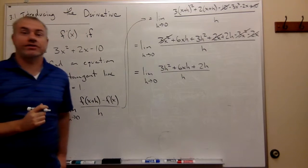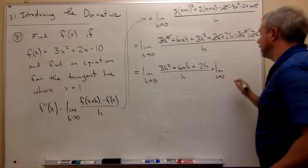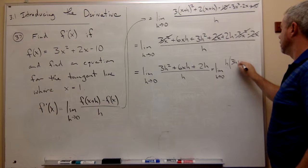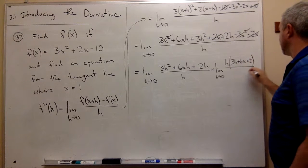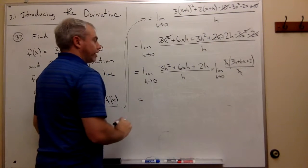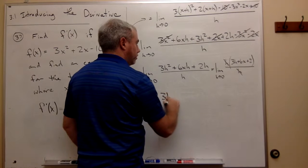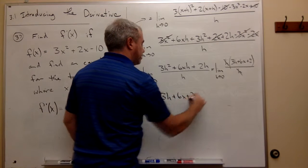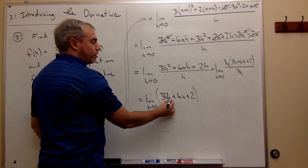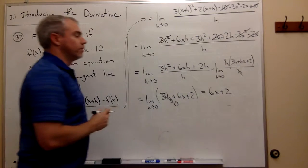I can factor out an h on the top. If I do, I get the limit as h goes to 0 of h times (3h + 6x + 2) all over h. The h's cancel and we're left with the limit as h goes to 0 of 3h + 6x + 2. Now we can take the limit as h goes to 0. 3 times h would go to 0 and I'm left with 6x + 2 for my derivative.